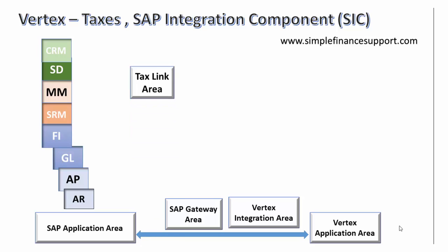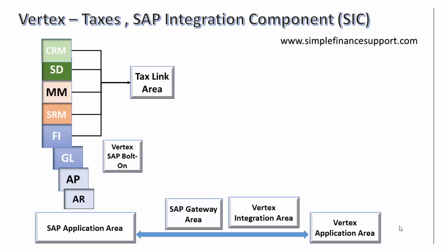There is a tax link area within the SAP application area, meaning all calls going to Vertex are routed through the tax link area. Vertex also developed a bolt-on called the SAP Vertex bolt-on, which is native to SAP and written in ABAP code. This means the Vertex bolt-on looks like standard SAP code with SAP transaction codes exclusively developed by Vertex for linking the tax area. All application modules are linked to the tax link area.